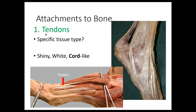Muscles attach to bones by tendons. Tendons look like dental floss — they are cords of dense regular connective tissue. Dense regular connective tissue means all of the collagen fibers are oriented parallel to each other, going in the same direction. That allows them to resist force so that when the muscle contracts and pulls on the tendon to pull on the bone, all of the force is oriented in the direction the muscle is pulling.